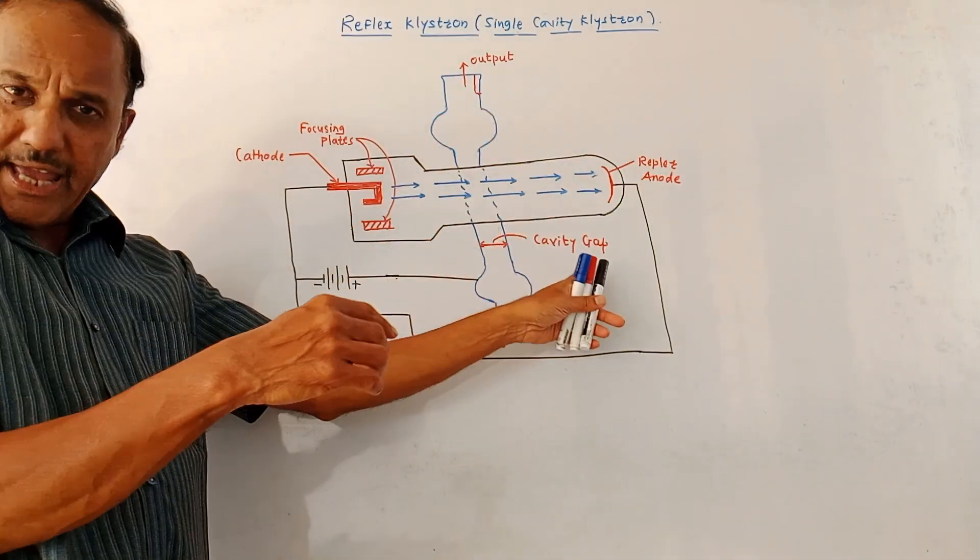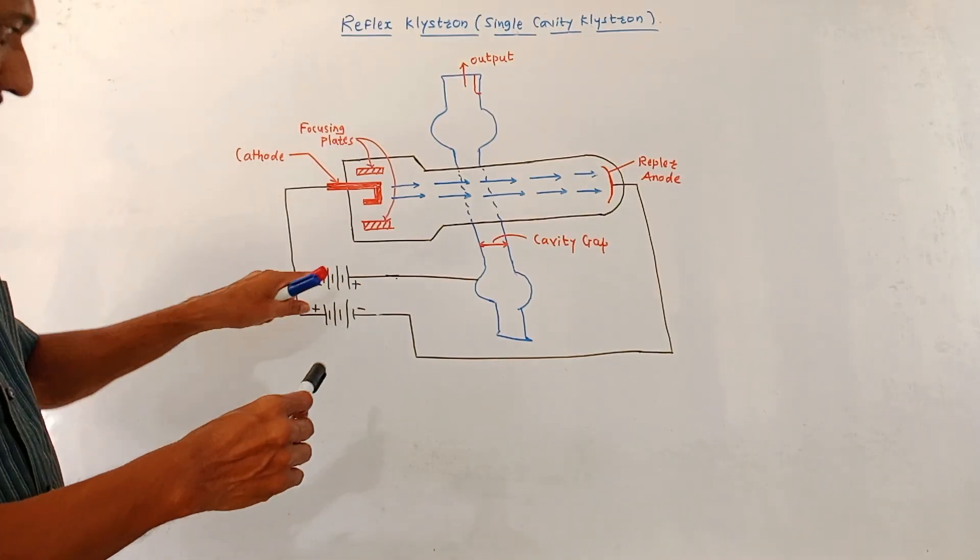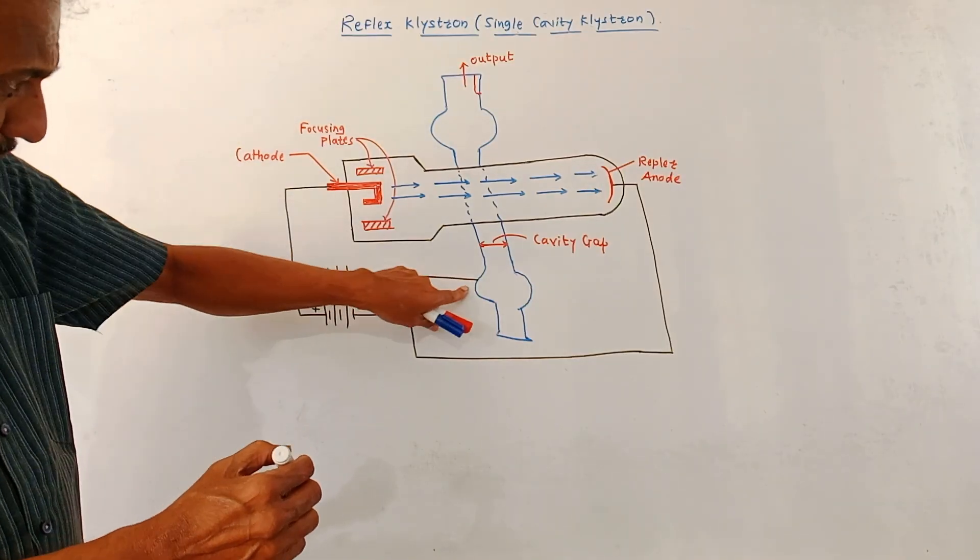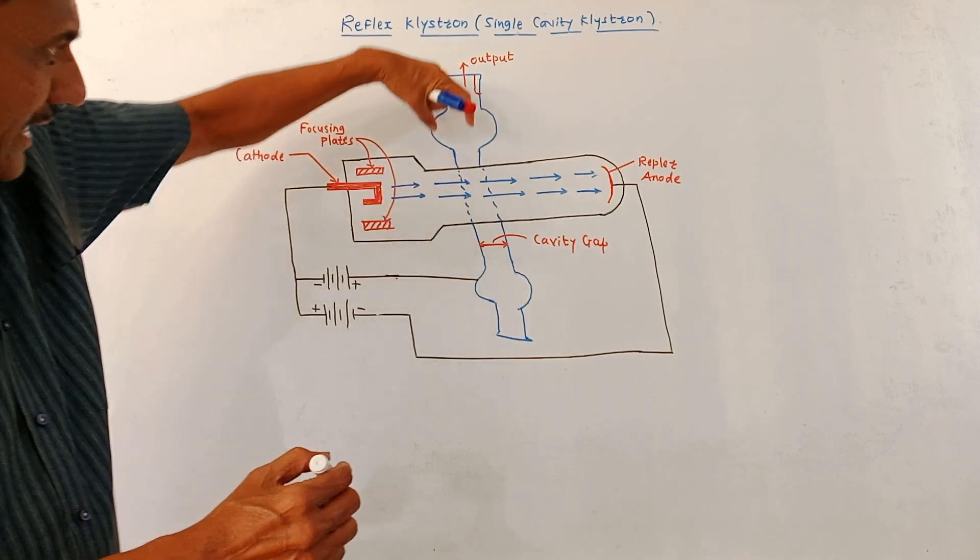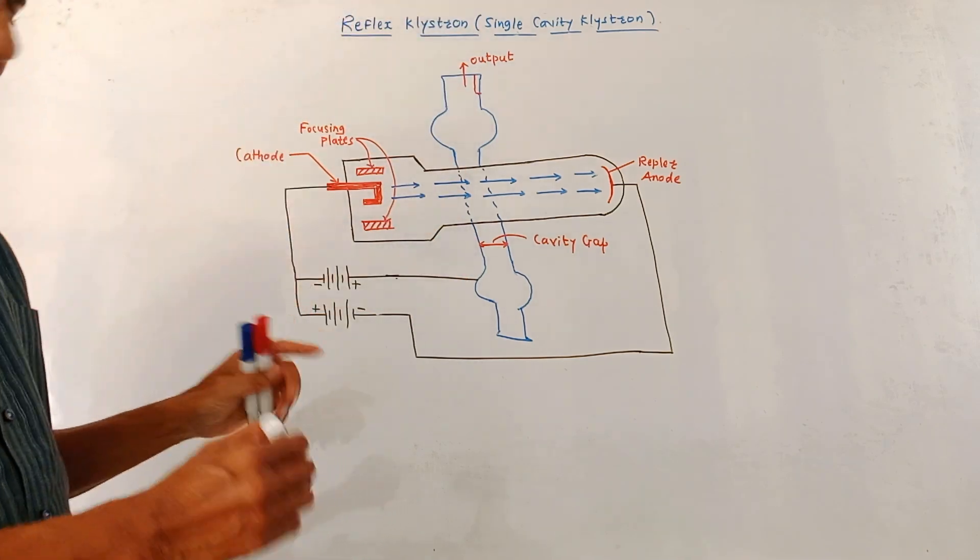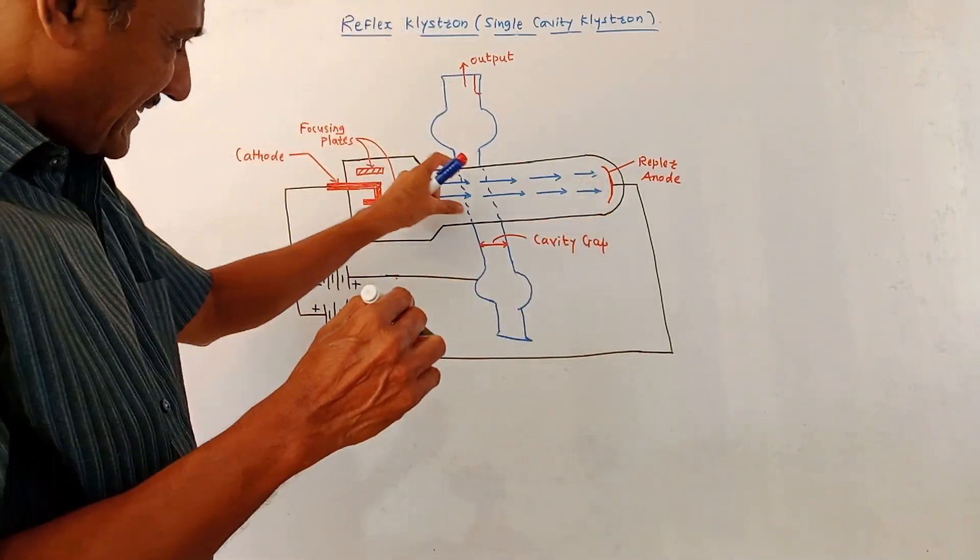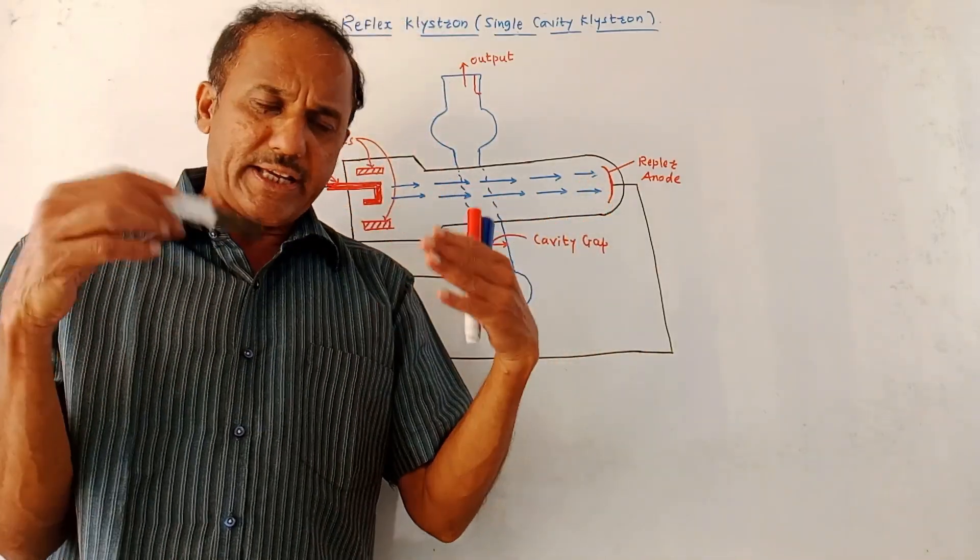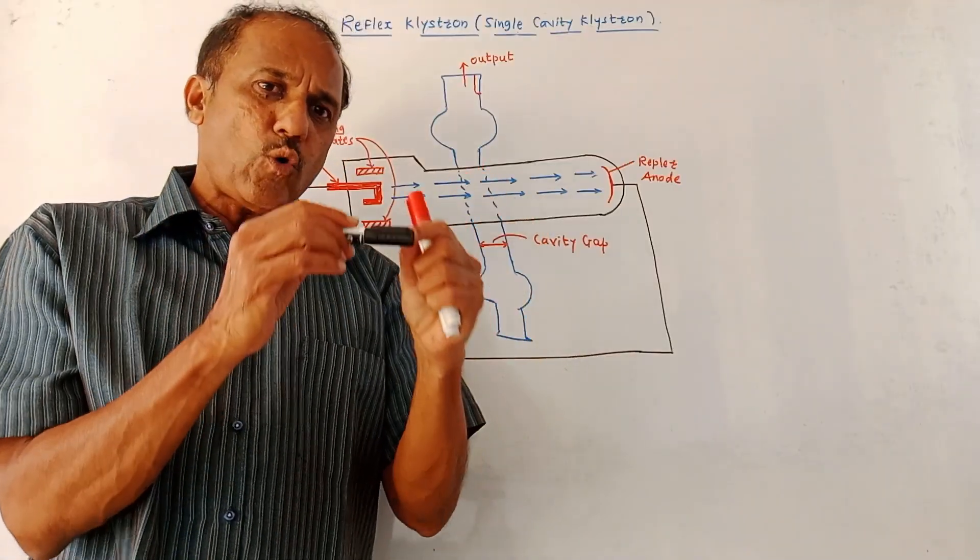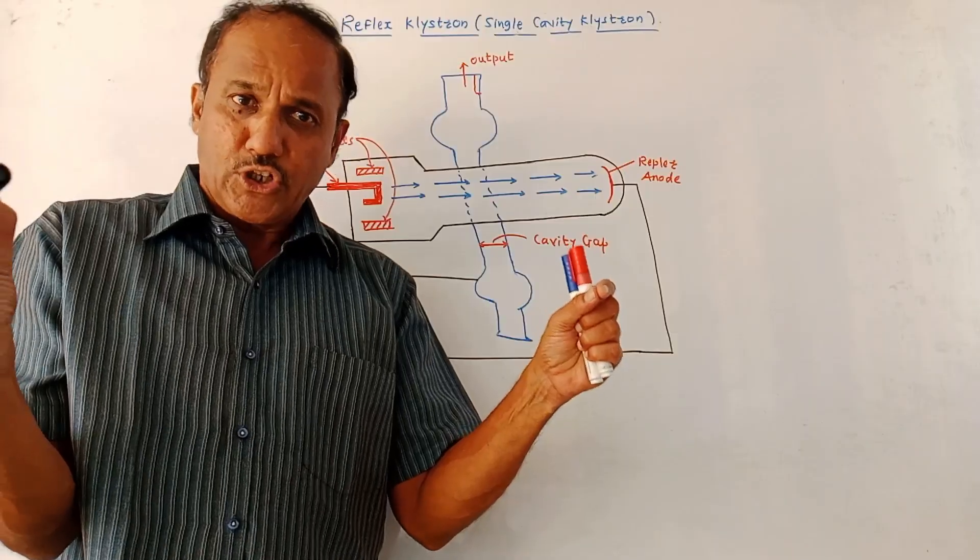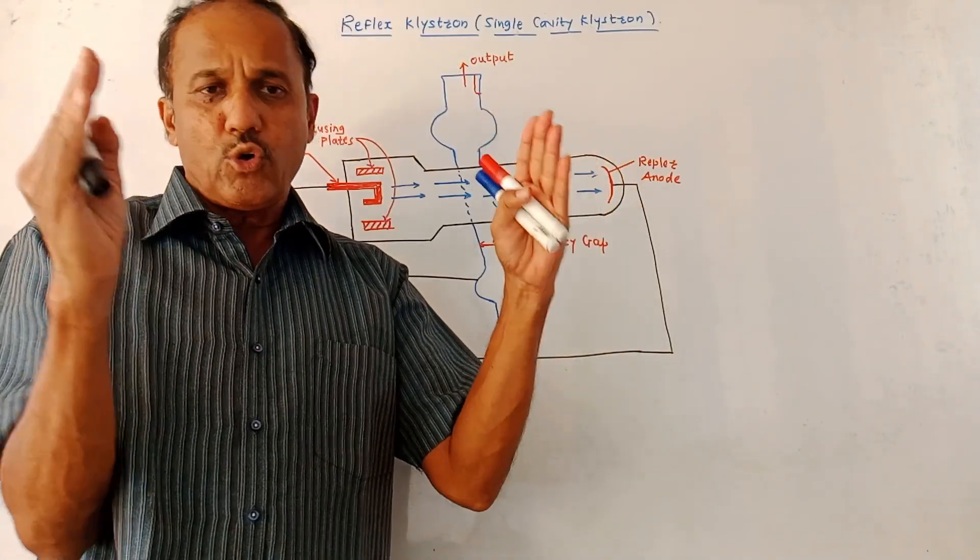Now this is the cavity. This part indicates the gap of the cavity. For this cavity, more positive supply is applied at this terminal and output is taken from the upper end. Suppose certain electrons are passing when there is no cavity gap voltage. Then there won't be any change in the speed or motion of such electrons when the cavity voltage is zero.